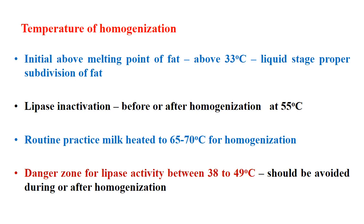Here we will see how temperature plays an important role in homogenization. Above the melting point of fat — that is, above 33 degrees Celsius — is required, as that is the liquid state and proper for subdivision of fat. Lipase inactivation is very important, either before or after homogenization at 55 degrees Celsius. In practice, milk is heated to 65 to 70 degrees Celsius for homogenization. The danger zone for lipase activity is between 38 to 49 degrees Celsius — milk should not be kept at this temperature, as that will cause more lipase activity leading to rancidity.